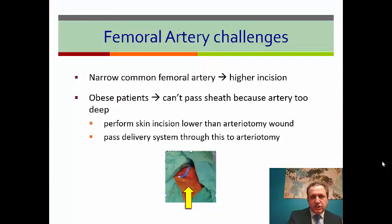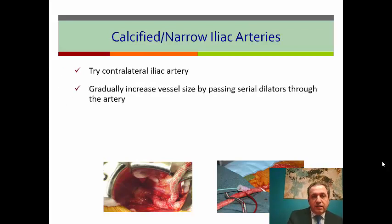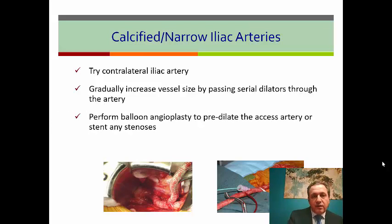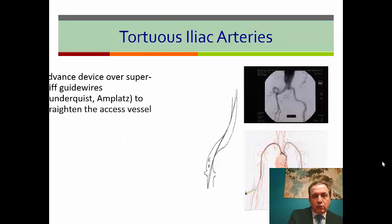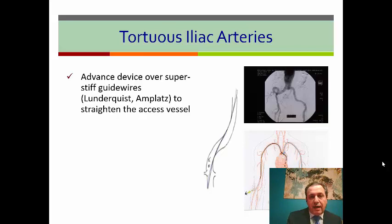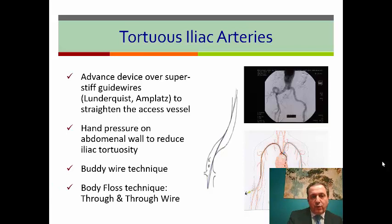What about access challenges? If you have a narrow common femoral artery, go to a higher incision. If you have an obese patient where you cannot pass the sheath because the artery is too deep, try to perform the skin incision lower than the arteriotomy wound, then pass the delivery system through this to the arteriotomy. If you have iliac calcification, try to control the external iliac artery, increase the vessel size by passing serial dilators, perform balloon angioplasty to predilate the access artery, or stent any stenosis. If you cannot do any of the above, then use an iliac conduit — you need at least a 10 mm Dacron graft. For a tortuous iliac artery, you can use a super-stiff wire like Lunderquist or Amplatz to straighten the iliac artery, or apply hand pressure on the abdominal wall to reduce iliac tortuosity, or use the body wire through-and-through technique, which we discussed before.